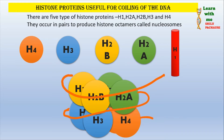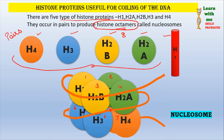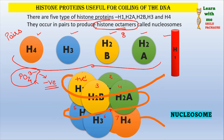The negatively charged DNA molecule will wrap around these positively charged histone proteins and will form a nucleosome. As we know, DNA is negatively charged due to the presence of phosphate groups — this we have already discussed in a previous video. Just remember: DNA is negatively charged and histone proteins are positively charged, which is why they attach to each other.